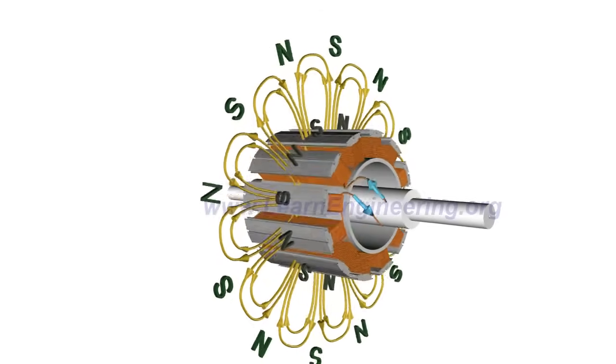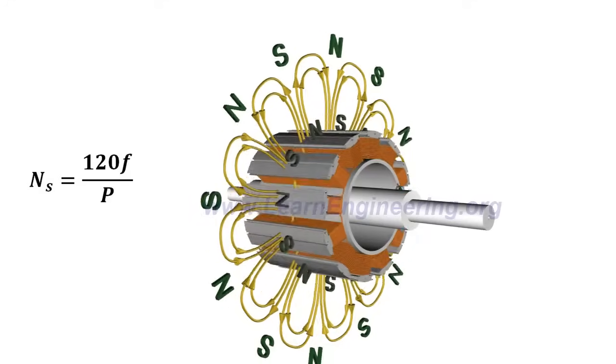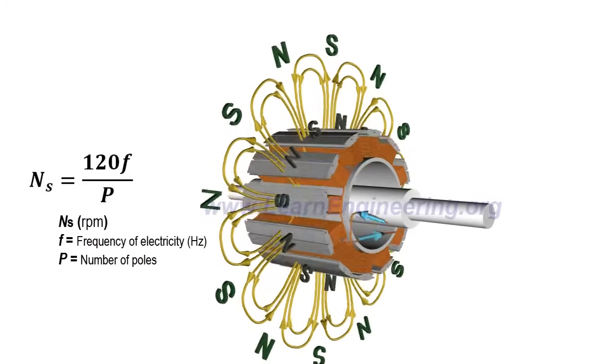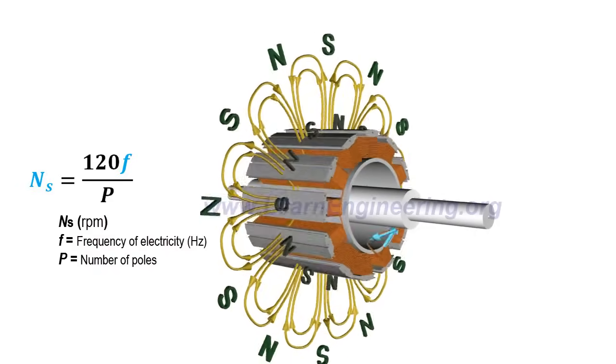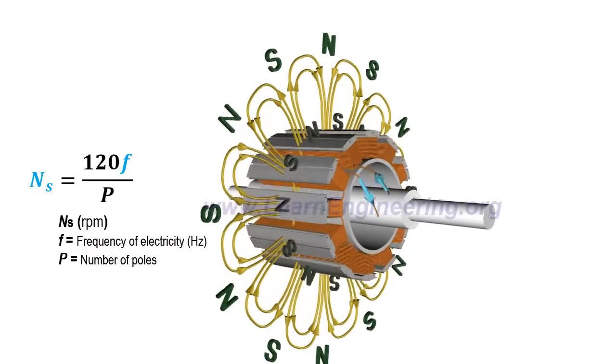Synchronous speed can easily be derived as follows. This means that if one has control over frequency of the electricity, speed of synchronous motor can be very accurately controlled.